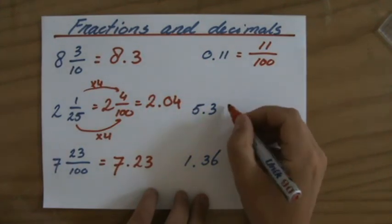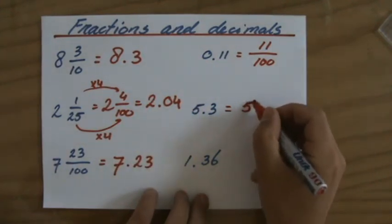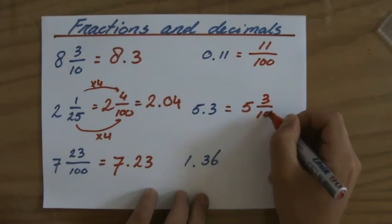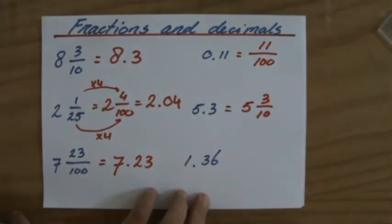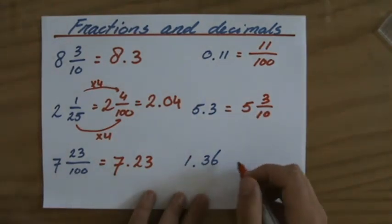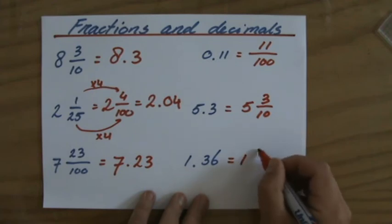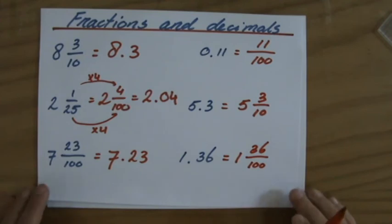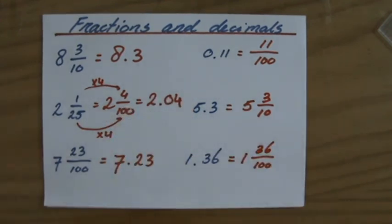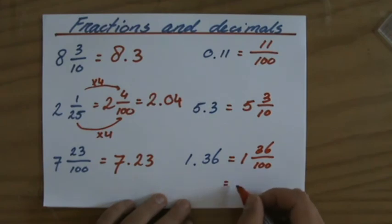5.3. So that is a mixed number 5, and I have 3 tenths, 3 over 10. Okay. And 1.36. Again, a mixed number 1 and 36 over 100. And that last one, 36 and 100, they're both even.